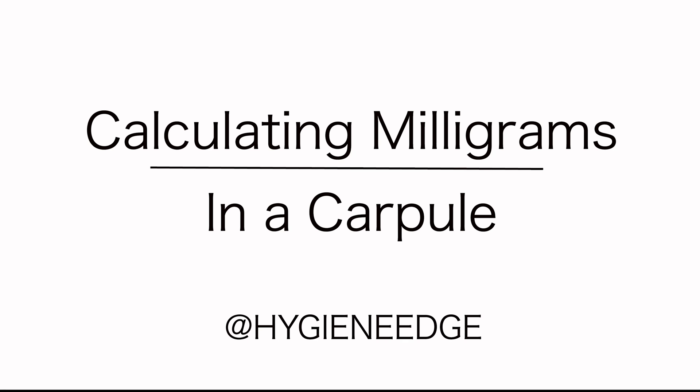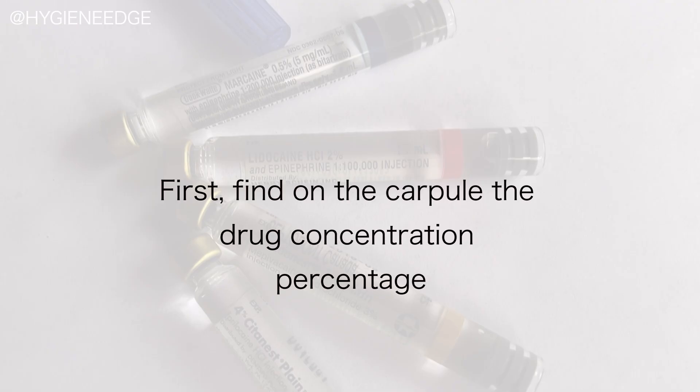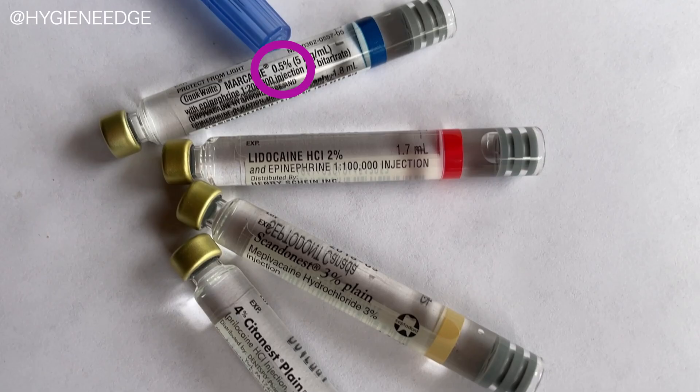You know the maximum amount of milligrams you can give a patient, but how many milligrams are in each carpule? The first step is to know the drug concentration percentage written on the carpule — it'll either be 0.5%, 2%, 3%, or 4%. Then do the following calculations to determine how many milligrams are in just one cartridge.